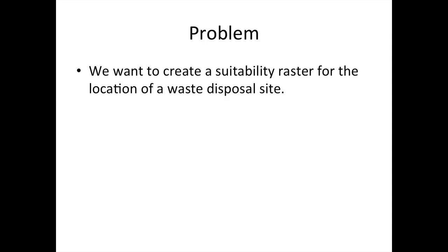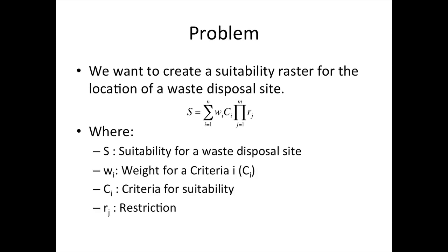The problem we have is we want to create a suitability raster for the location of a waste disposal site. We have proposed the following equation where suitability is the sum of our weighted criteria multiplied by the product of our restrictions. In our equation, S is our suitability for waste disposal, Wi is the weight for criteria i, Ci is our criteria for suitability, and Rj is our restrictions.